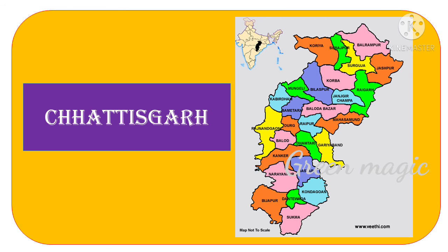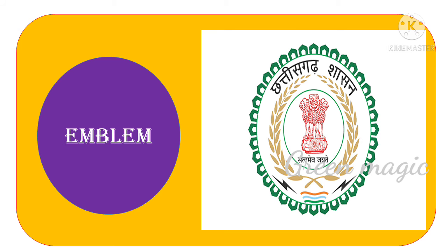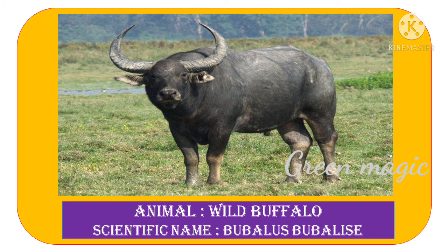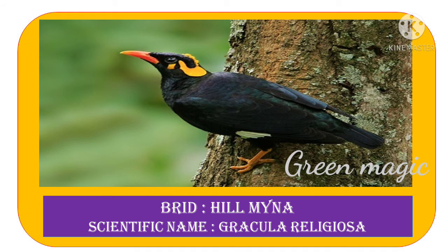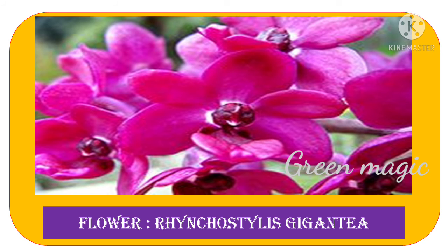Our last state is Chhattisgarh. This is the map of Chhattisgarh. This is the emblem of Chhattisgarh. Animal: Wild Buffalo. Bird: Hill Myna. Flower: Rhynchostylis Retusa, or Dinti.